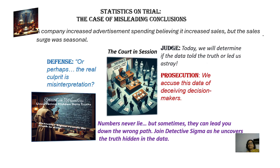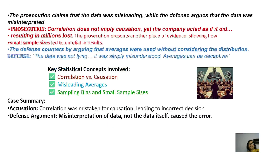There was no evident conclusion because their belief was only about advertisement. So they came to a crossroads where two groups formed — one was the prosecution, which believed the data had deceived the decision makers and put the entire blame on the data. The second group said it was the misinterpretation of the data that led to the loss. They presented the case before the court and the judge appointed Detective Sigma to uncover the truth. Detective Sigma knew that numbers never lie — they are constant — but sometimes the interpretation of the data is not done correctly, leading to misleading conclusions.